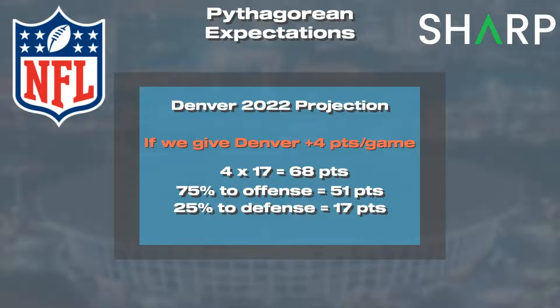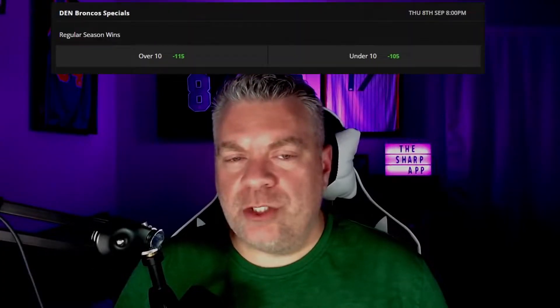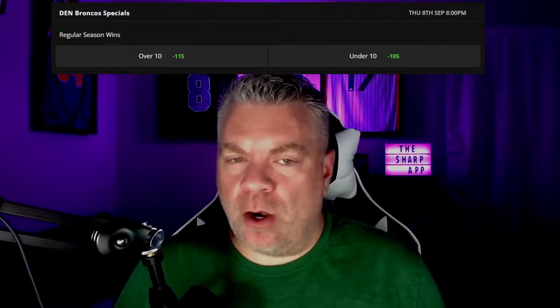On a four-point-per-game basis, I want to give about 75% of those points to offense and 25% to defense. Four points a game better over 17 games equals 68 total points; we allocate 51 to offense and 17 to defense. Denver scored 335 points last year — adding 51 gives 386. They gave up 322 points; subtracting 17 gives 305. Running the Pythag expectation formula, they wind up with 10.2 wins and 5.8 losses. This season their win total is sitting at 10, so right where we are, that's where the market is at.